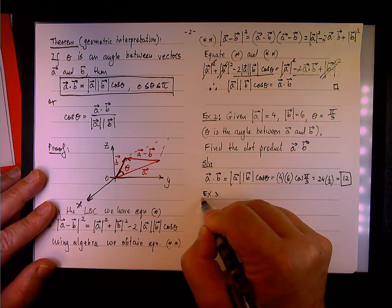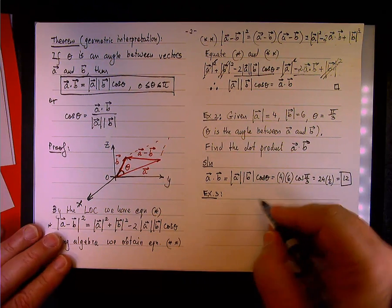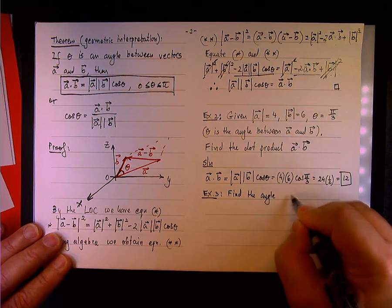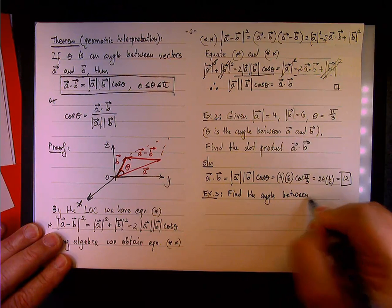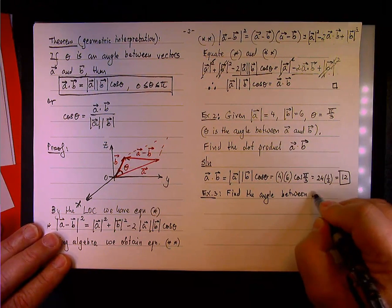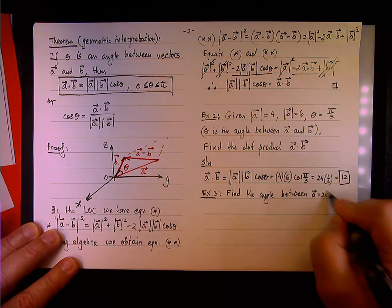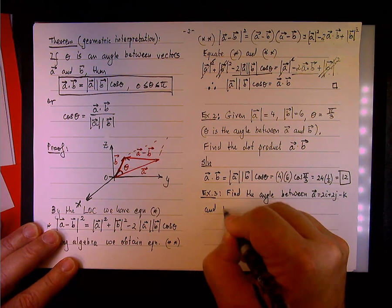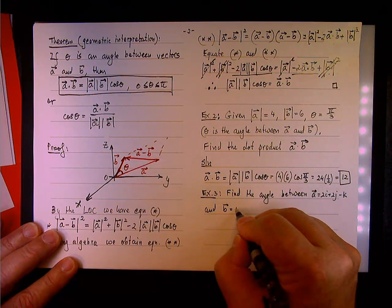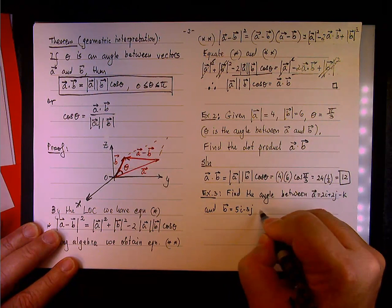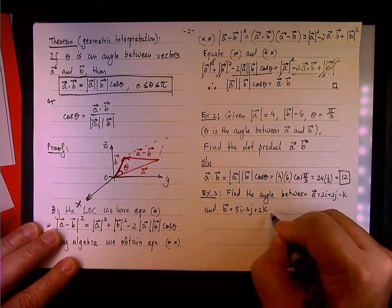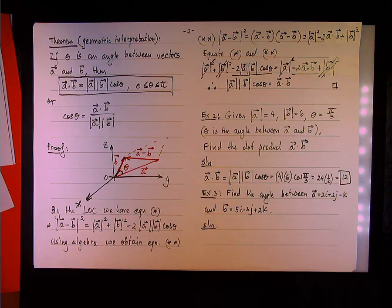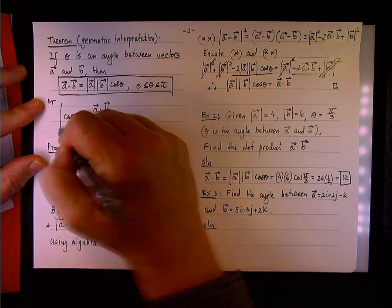And so now we'll do the next example, where, matter of fact, we're going to find the angle in between two. So, in this case, we need to find the angle between two vectors, so one vector will be, let's say, call it vector A, with 2I plus 2J minus K, and vector B, 5I minus 3J plus 2K.